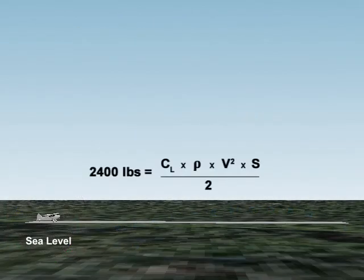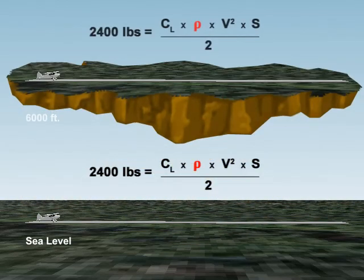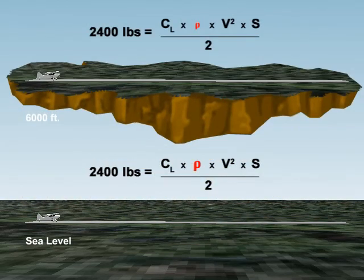In both cases, the wings must generate enough lift to overcome the weight of the airplane. At 6,000 feet, the density is less than at sea level. If we tried to take off at the same velocity as at sea level, the wing would not produce enough lift to allow the airplane to leave the ground.